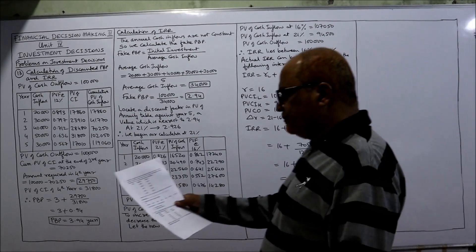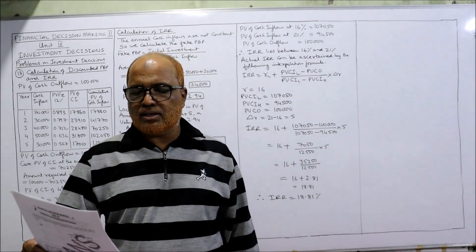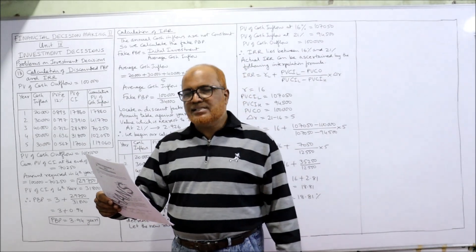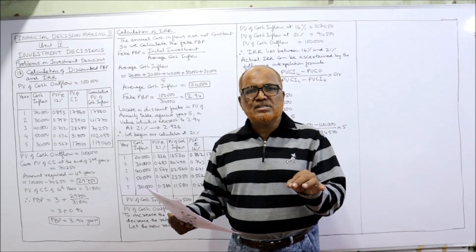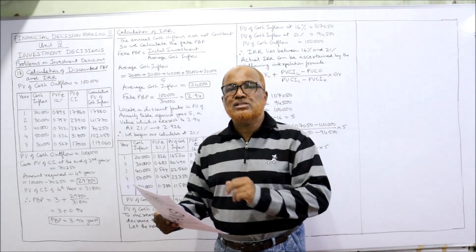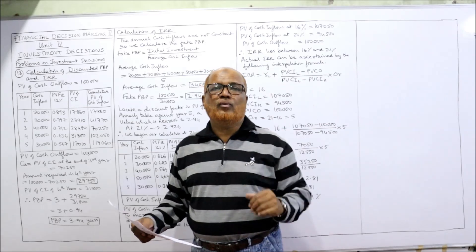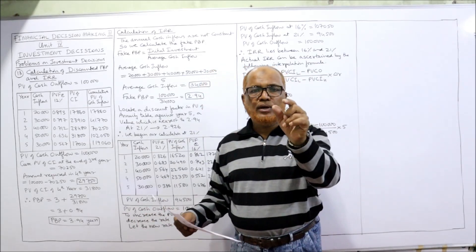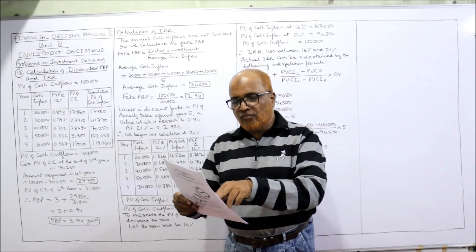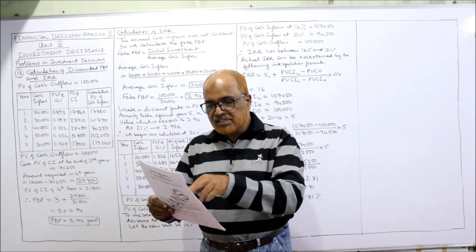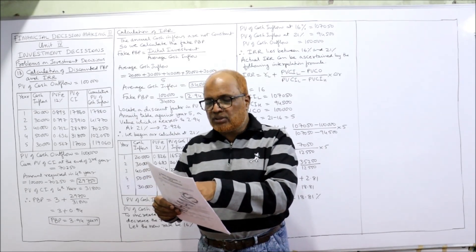The expected cash flows of a project are as follows. Year zero means beginning of the first year — there is a cash flow of minus 1 lakh. Minus 1 lakh denotes it's a cash outflow. The inflows are: first year 20,000; second year 30,000; third year 40,000; fourth year 50,000; fifth year 30,000.